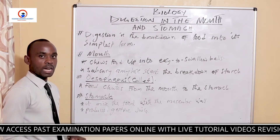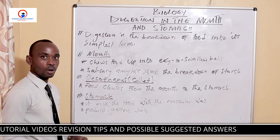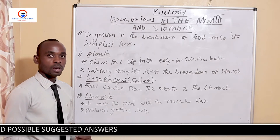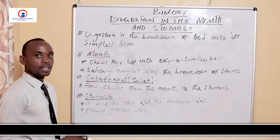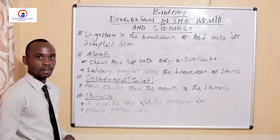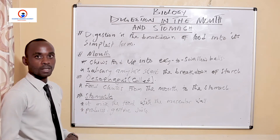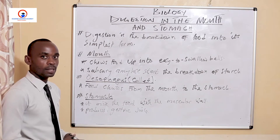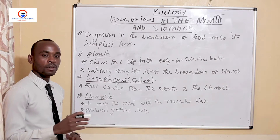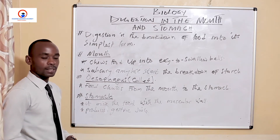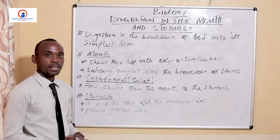Digestion starts in the mouth. There are two basic things that take place in the mouth. First, there is what we call mechanical digestion. This process takes place by the action of teeth — the teeth chew the big food chunks into smaller ones, breaking them down into smaller pieces that can be swallowed.